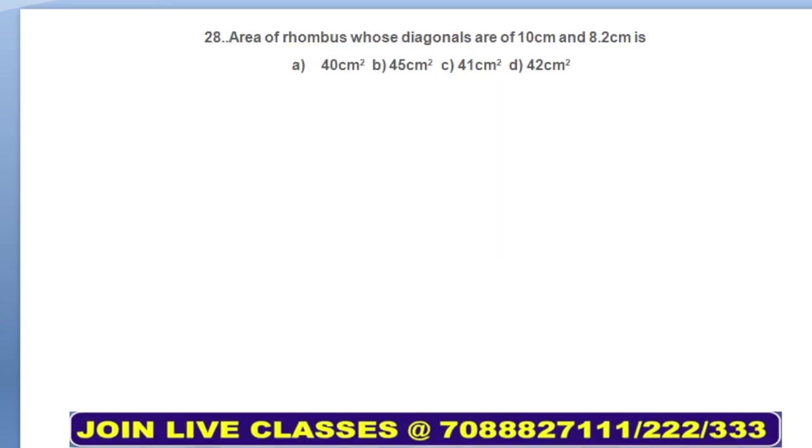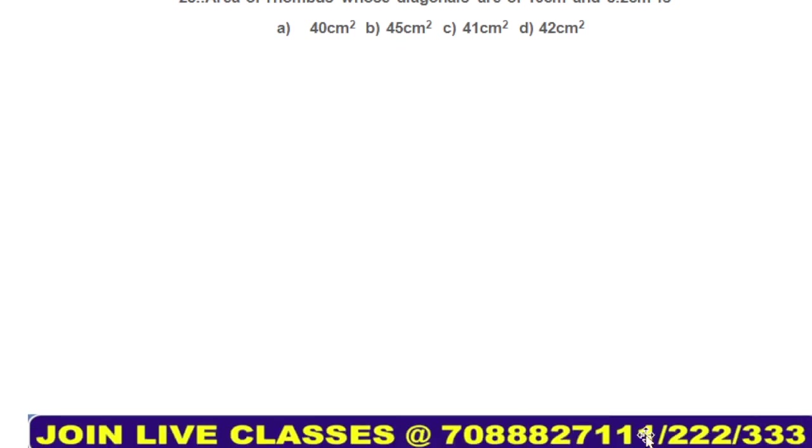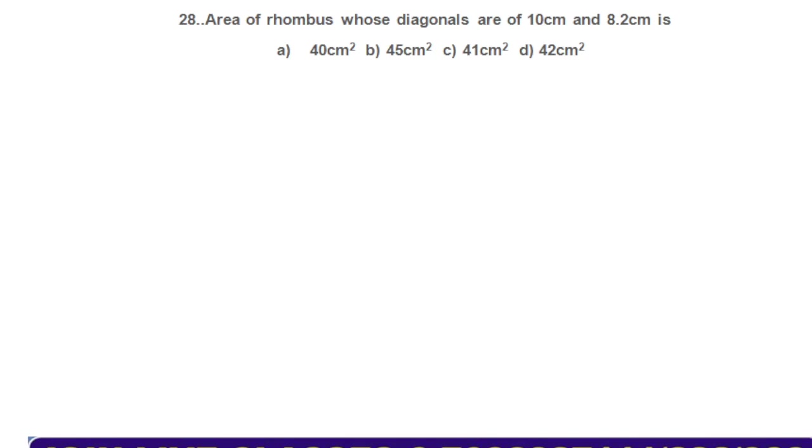Moving on to question number 28. Read the question, everybody. Area of rhombus whose diagonals are 10 centimeter and 8.2 centimeter. So what is the area of the rhombus? Area of rhombus equals half into product of diagonals.